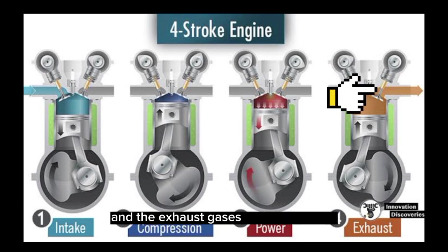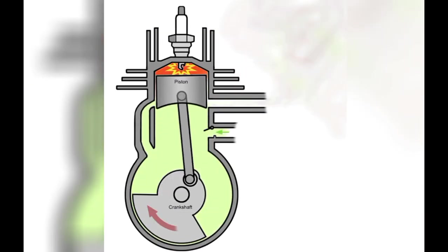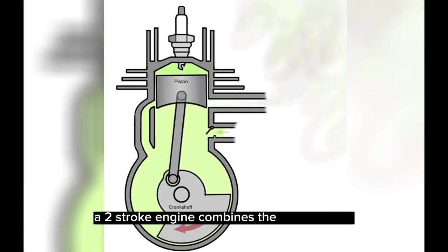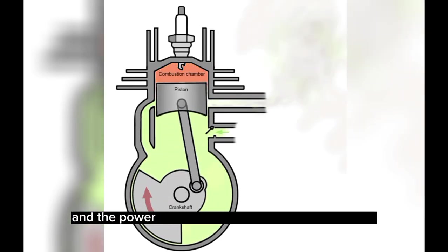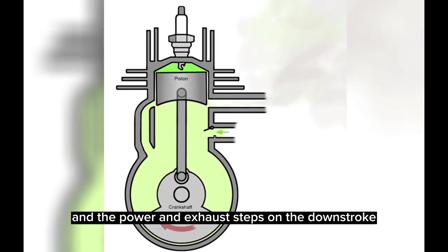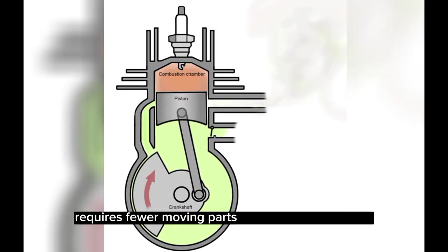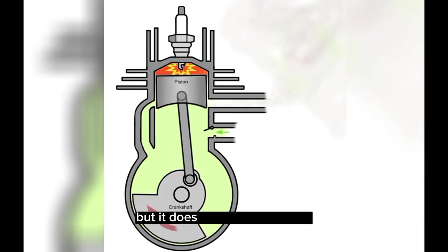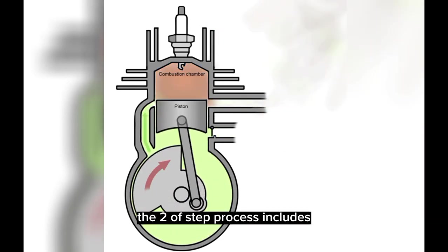A two-stroke engine combines the compression and ignition steps on the upstroke and the power and exhaust steps on the downstroke. This process requires fewer moving parts for easier maintenance, but it does provide less torque.